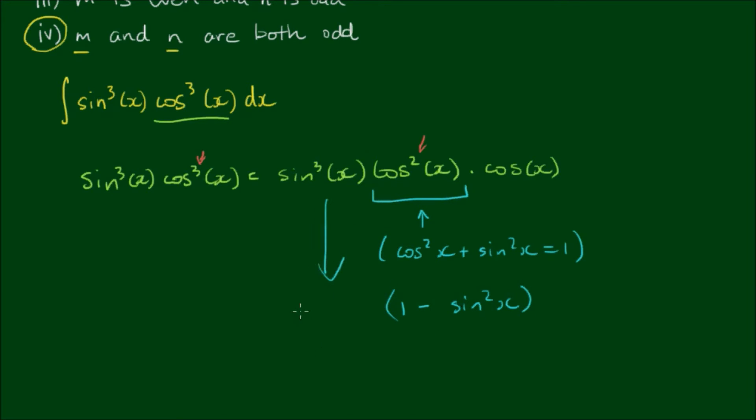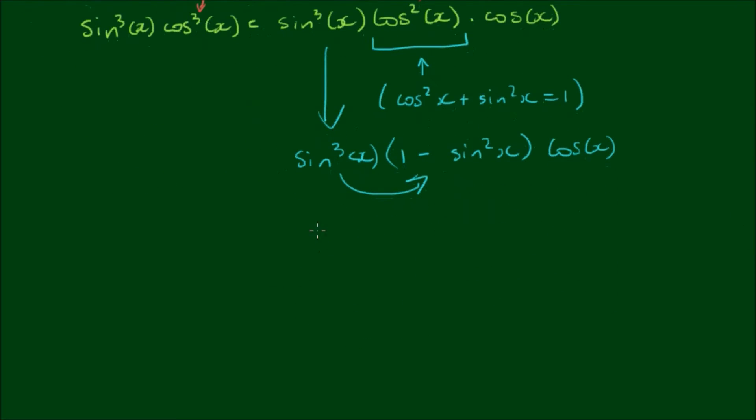The rest of the factors get copied down. Now let's multiply this sine cubed term in. So we end up with sine cubed x minus sine to the fifth power of x.